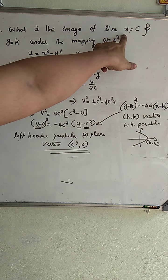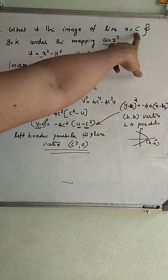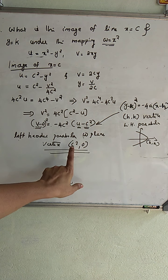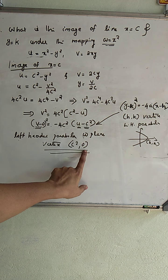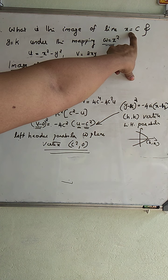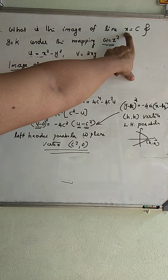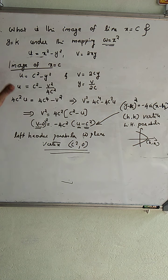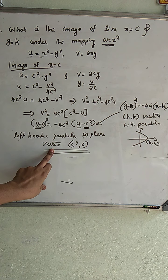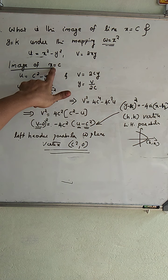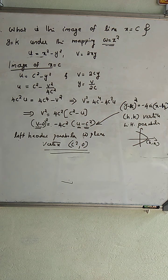We conclude that the image of the vertical line X equal to C in the Z plane is a left-handed parabola in the W plane whose vertex is at C square, 0. For different values of C — such as X equal to 2, X equal to 3, X equal to 0 — you can use this substitution procedure to find the corresponding image.